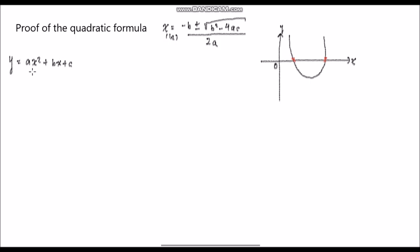This is the general form of a quadratic equation: y = ax² + bx + c. What I'm going to do is prove the quadratic formula for the quadratic equation using differentiation. I assume all of you are already familiar with differentiation. So in order to prove the quadratic formula, the first step we need to do is differentiate the general form of the quadratic equation. Let's differentiate this whole thing.